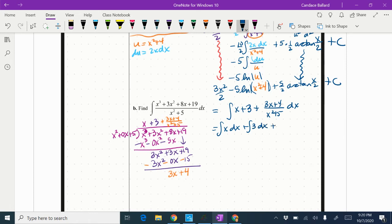split these into separate integrals over this same denominator. So I'm going to say 3x divided by x squared plus 5 dx plus the integral of 4 over x squared plus 5 dx.